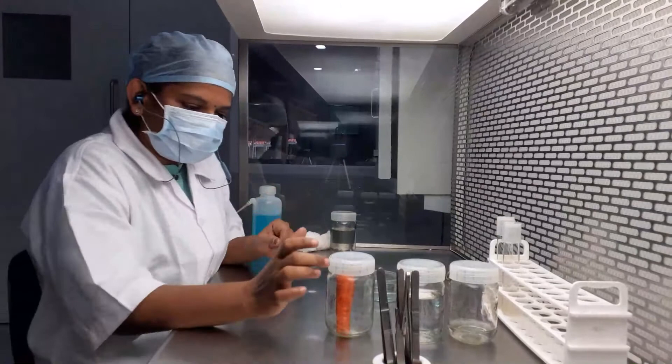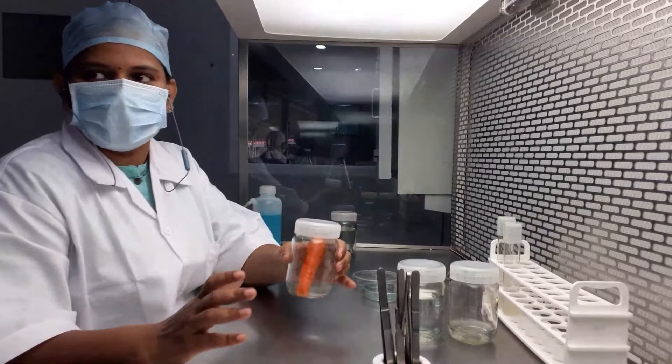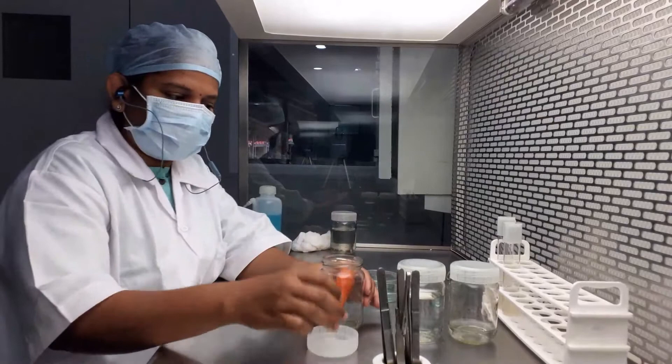We have done the first part of surface sterilization with tap water and detergent in the media preparation room. Now we are in the laminar air flow room, the inoculation room, where we will be carrying out the next surface sterilization of our carrot.